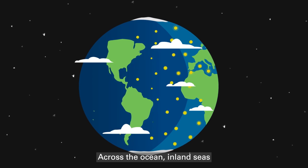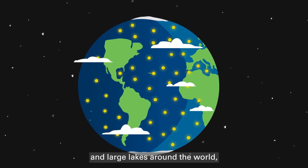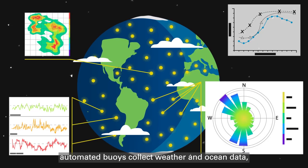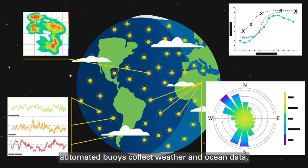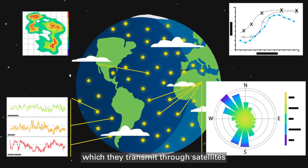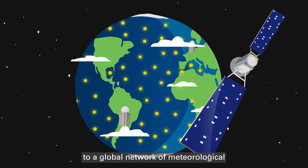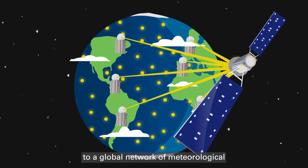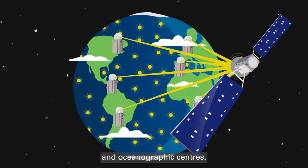Across the ocean, inland seas and large lakes around the world, automated buoys collect weather and ocean data, which they transmit through satellites to a global network of meteorological and oceanographic centers.